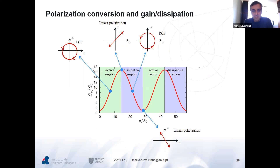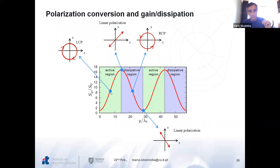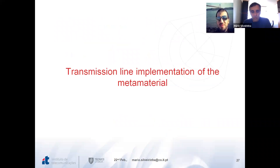A sketch illustrates this: the Poynting vector varies as the wave propagates, with regions of stronger amplification corresponding to circular polarization. The circular polarizations are the ones that activate the gain or the loss — for one circular polarization you have strong amplification, for the other strong attenuation. At the inflection points — the minima and maxima — you have linear polarizations where there is no amplification and no attenuation. This concludes the first part of the talk.